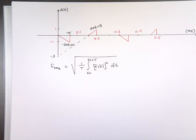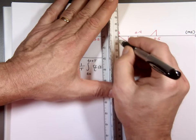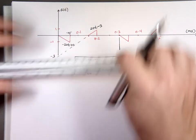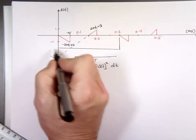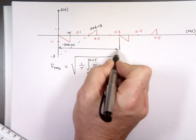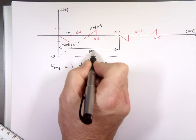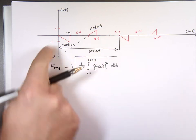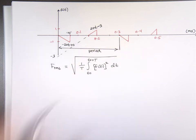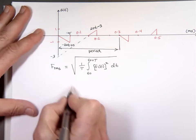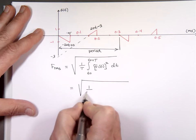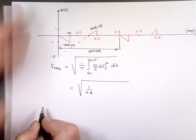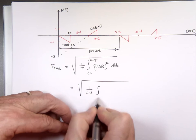The period is where the function starts to repeat. It looks like it starts to repeat right here — from there to there, that's your period. So the RMS value will use 1 over 0.3, integrated from 0 to 0.3.